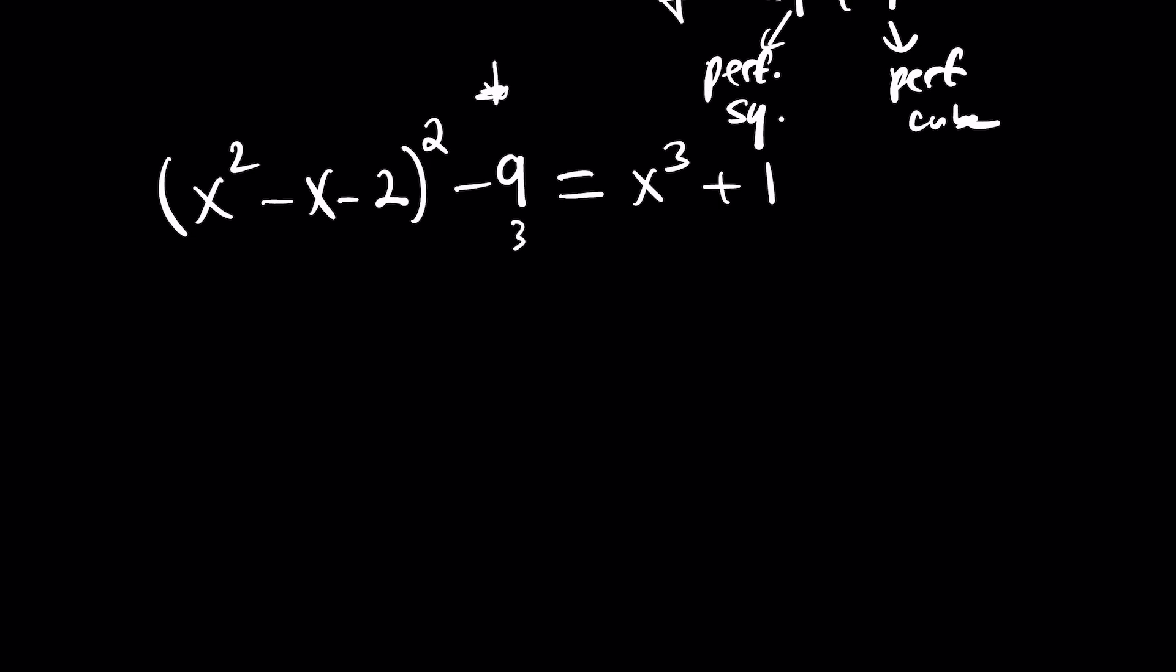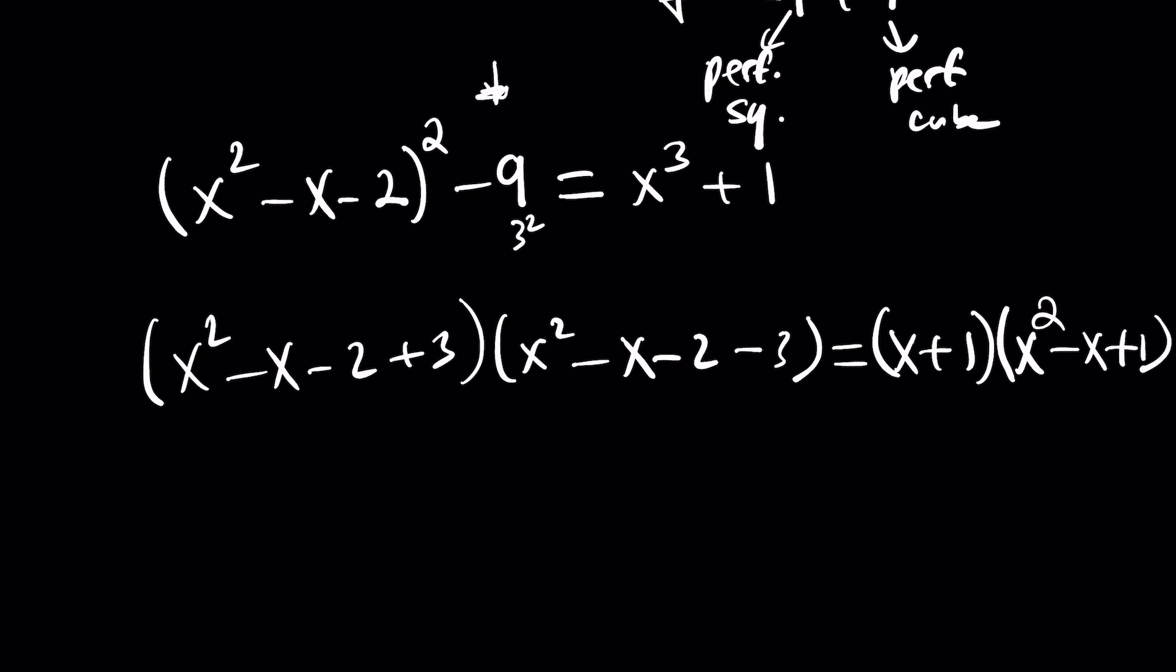This is 3 squared. So, we can kind of write this as a difference of two squares. In other words, this times this. And then, the right-hand side is just a sum of two cubes, which you should know the formula for. It'll be x squared minus x plus 1 multiplied by x plus 1.